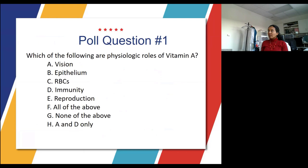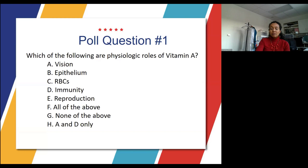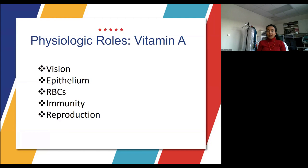Our first polling question: which of the following are physiologic roles of vitamin A? The vast majority of you said all of the above, which is definitely true. The physiologic roles of vitamin A include vision, epithelium, red blood cells, immunity, and also reproduction. So all of the above is true.